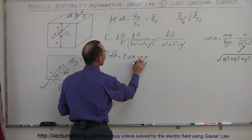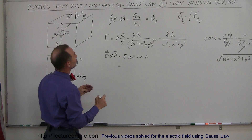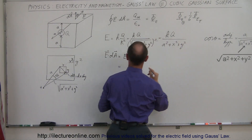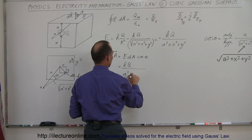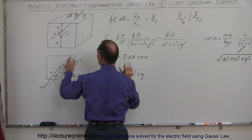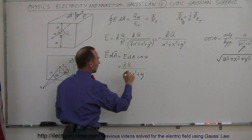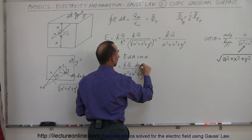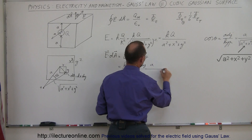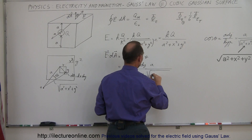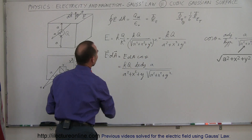Putting it all together: E dot dA times cosine theta equals KQ divided by (A squared plus x squared plus y squared), times dx dy for the area element, times A divided by the square root of A squared plus x squared plus y squared. That is the full expression for E dot dA at any point on the face.